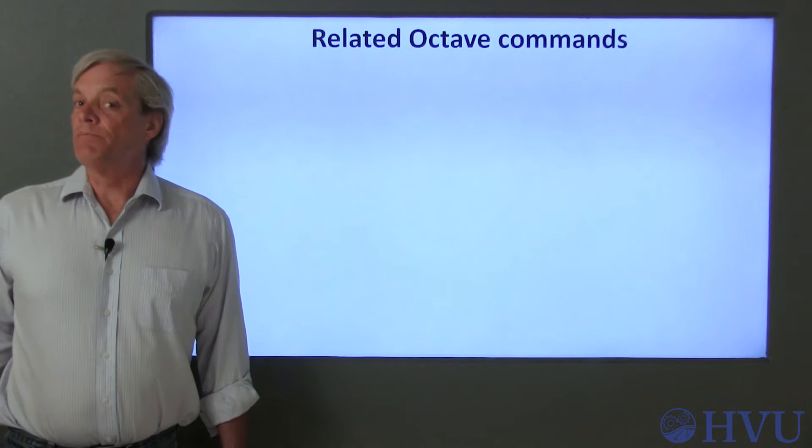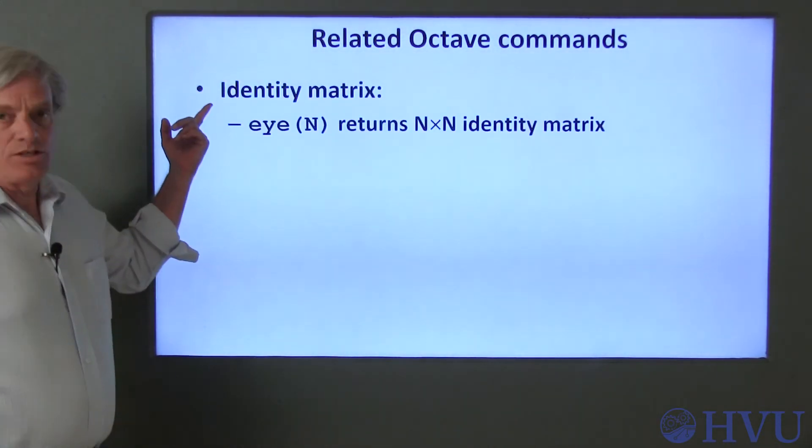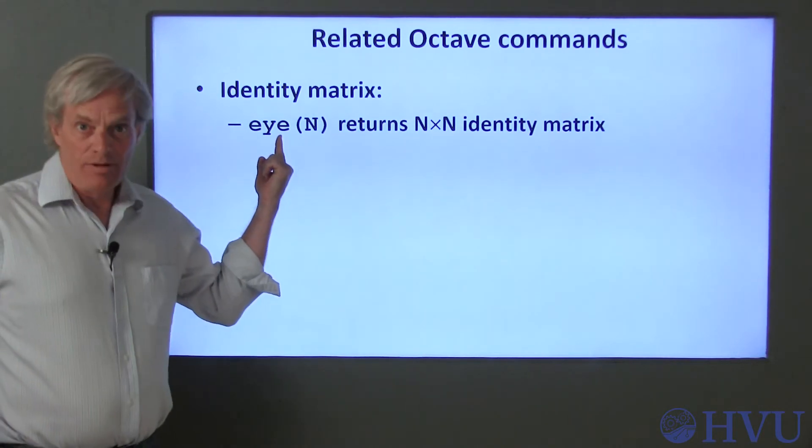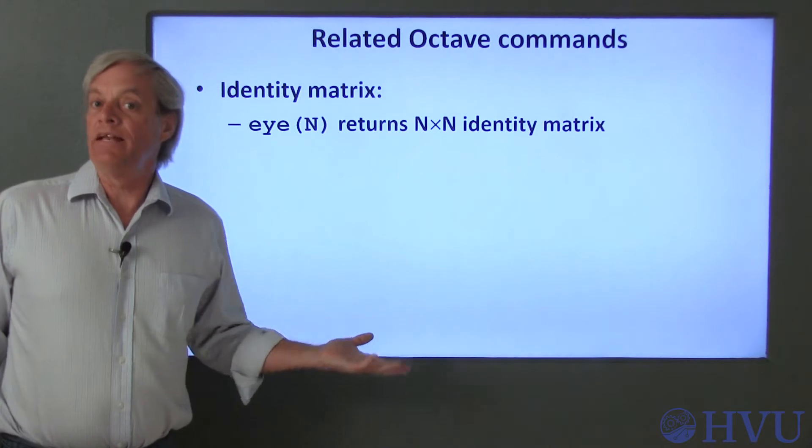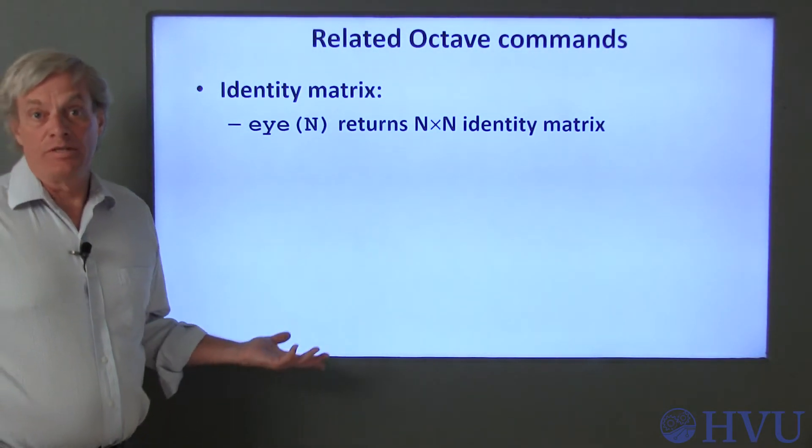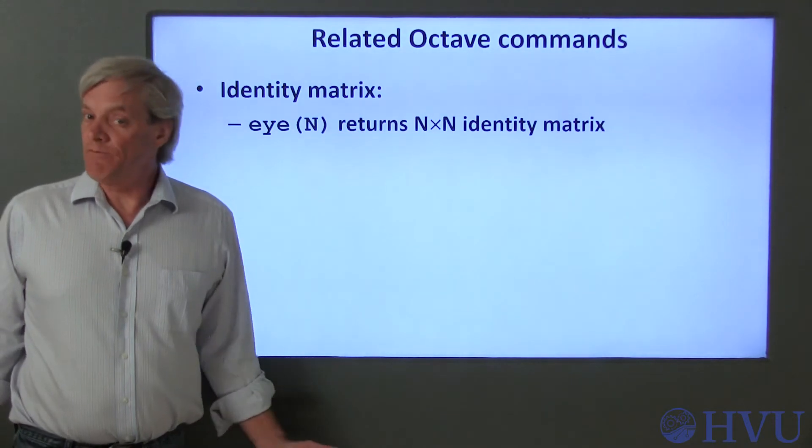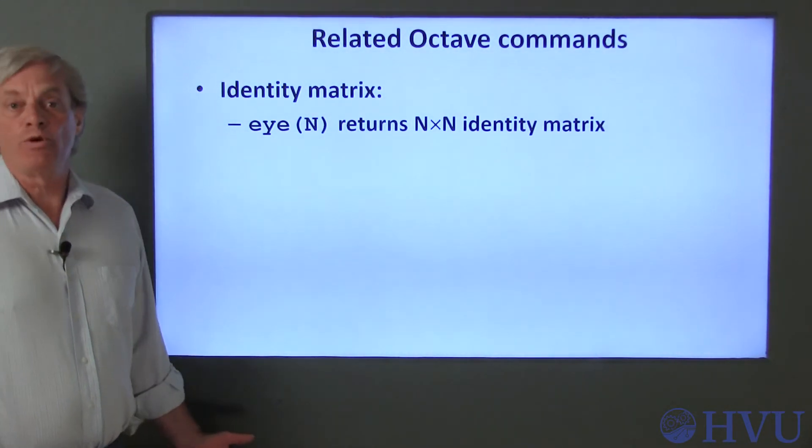Now let's talk about some Octave commands related to these concepts. The Octave command to create an identity matrix is EYE. If you send the command a single argument N, it will create an N by N identity matrix. You can send it two arguments, the number of rows and the number of columns, if you want to create a non-square identity matrix, but we won't have a use for those here.